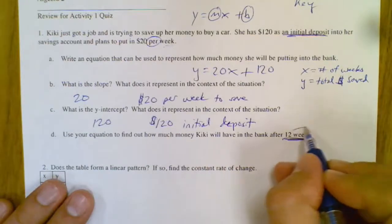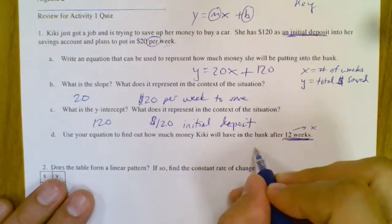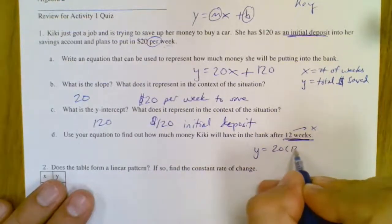Sometimes a problem will do the other one. So I'm going to say y equals 20 times 12 plus 120.